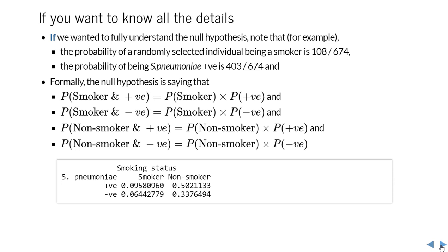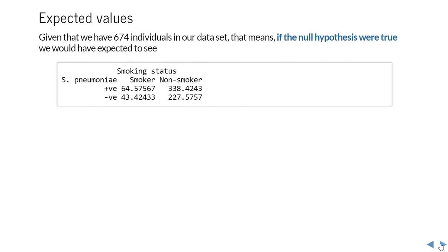Below you can fill a table with the probabilities. The null hypothesis says if the variables were independent, let's complete those four calculations. The probability of picking somebody at random and finding they were both a smoker and tested positive for strep is 0.0958. That's the null hypothesis, and what that implies—if the null hypothesis is true—we would have expected to see 64.6 strep-positive smokers and 227.6 strep-negative non-smokers, for example. That's what the null hypothesis is saying: if those two categorical variables were independent, that probability calculation applies, and we end up with those expected counts in each cell of our contingency table.